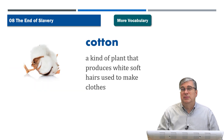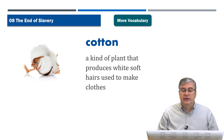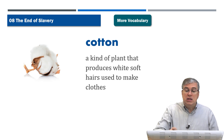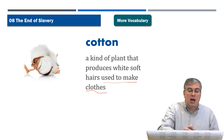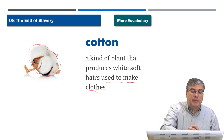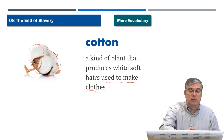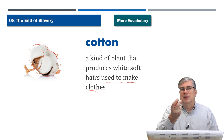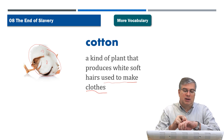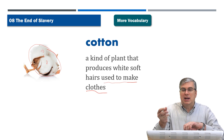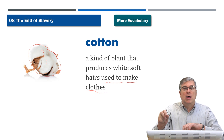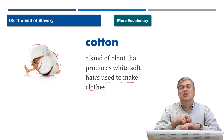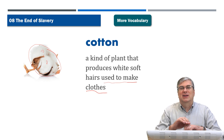Cotton — I mentioned this before when I talked about plantations. Cotton is a kind of plant that produces white soft hairs used to make clothes. This is a very important crop. People still use cotton balls sometimes for medicine — if you have a wound, your mom might take a cotton ball, put it in some disinfectant, and brush your hand with it to help disinfect your cut.